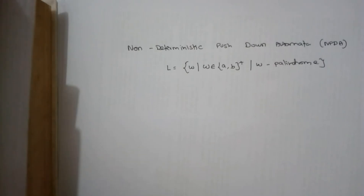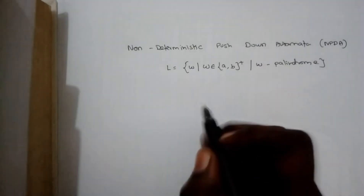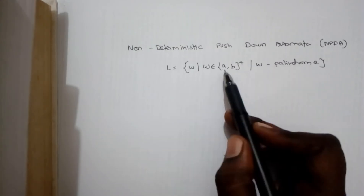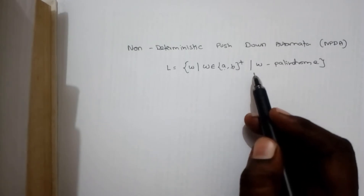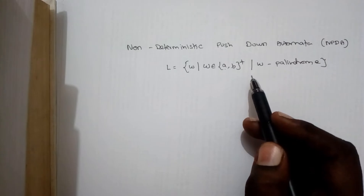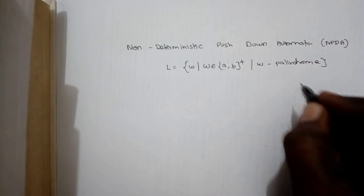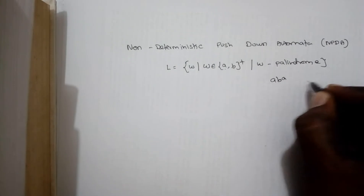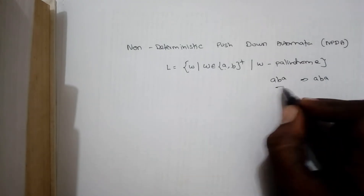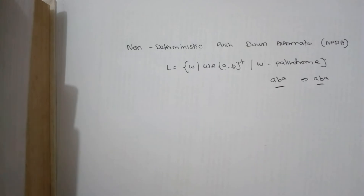Welcome back. In this video we are going to construct a non-deterministic push-down automata for the palindrome problem. We already saw a deterministic push-down automata for the WCW^R problem, and this is a similar case. Here W is a palindrome made up of A and B combinations. A palindrome means the string and its reverse are the same — for example, ABA reversed is again ABA.